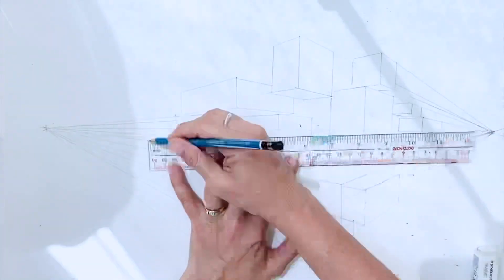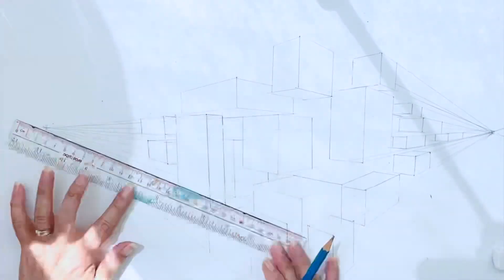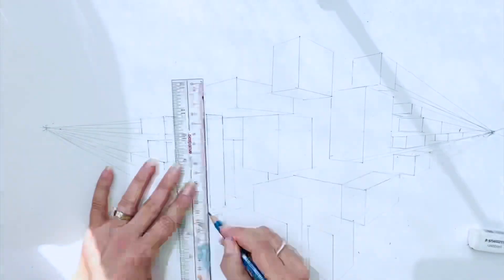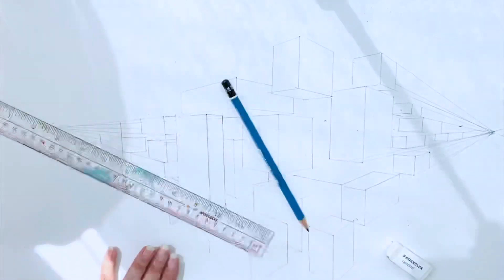Of course, those blocks sitting on or along the horizon line will not reveal their bottom or top. Instead, only two sides will be on display.